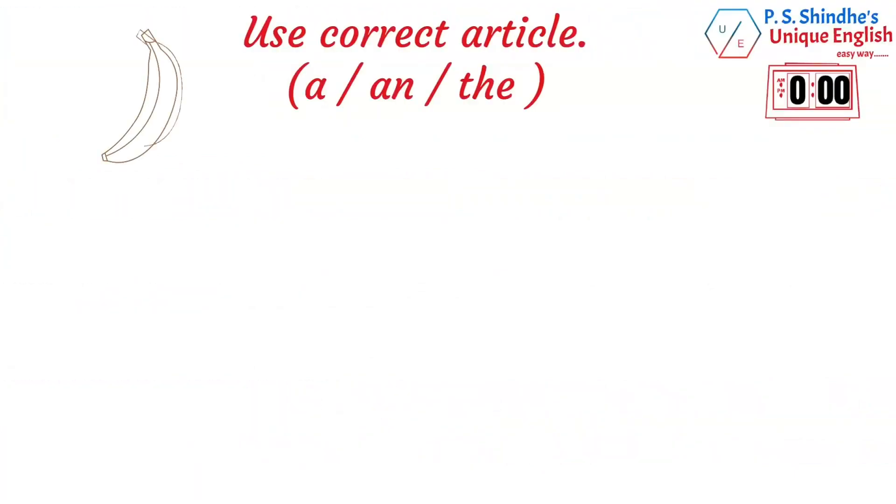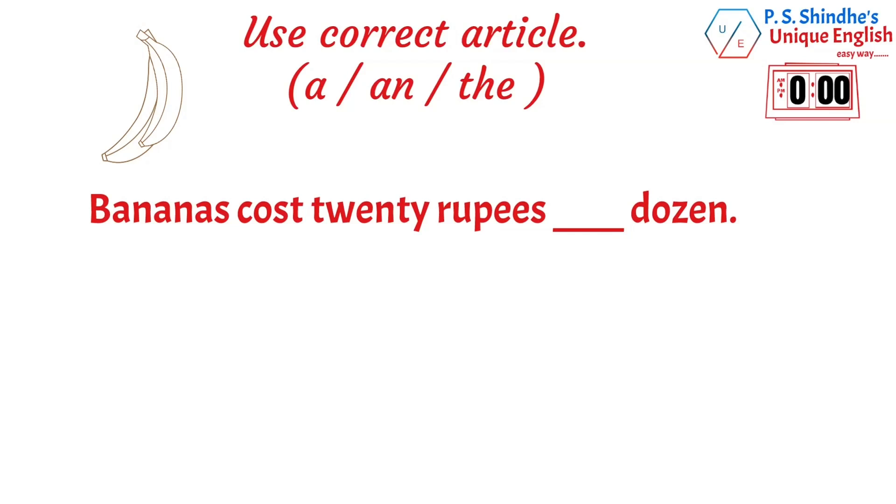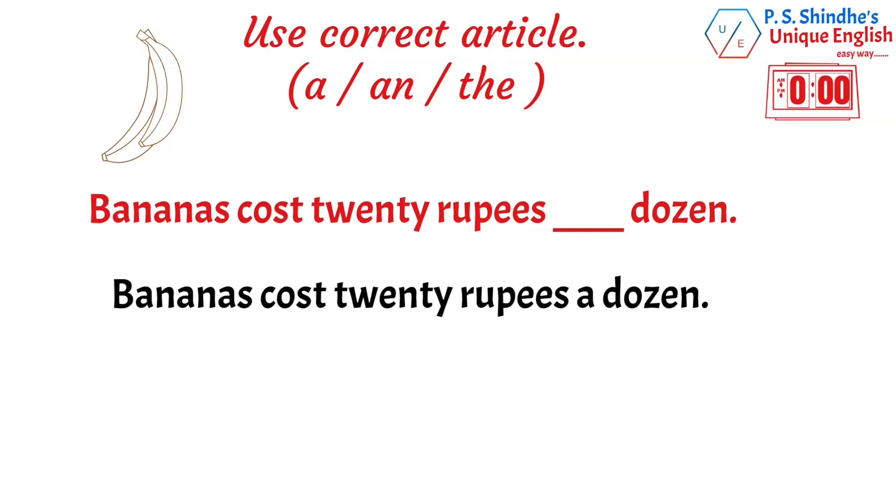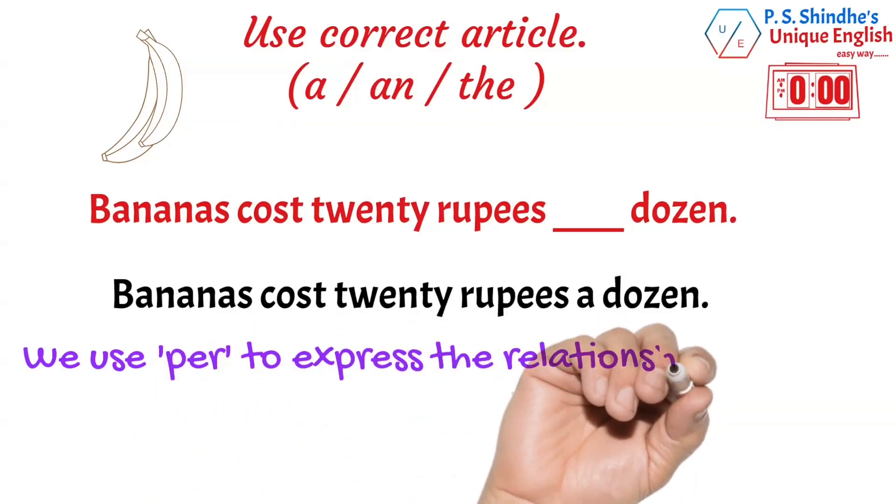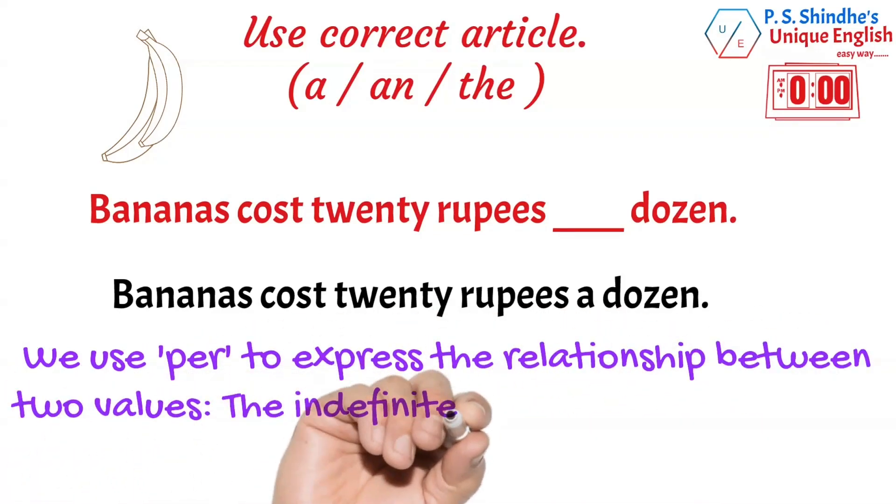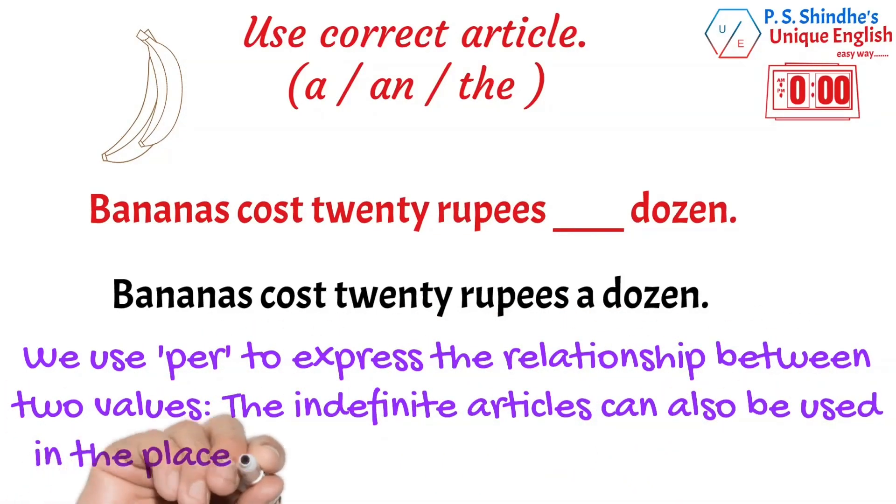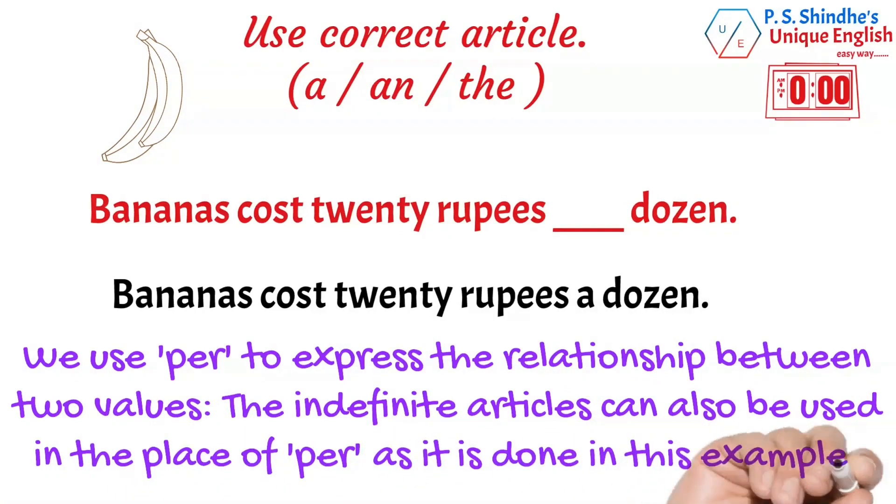Bananas cost twenty rupees blank dozen. Bananas cost twenty rupees a dozen. We use per to express the relationship between two values. The indefinite articles can also be used in the place of per, as it is done in this example.